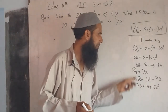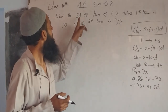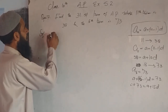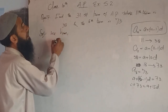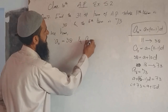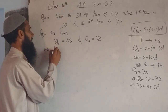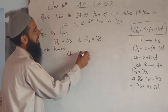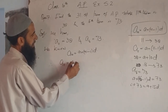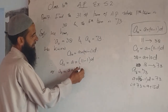We now have two relations. When we simplify these two equations together, we will get the value of 'a' and the value of 'd'. Then we can easily find the 31st term. So: a_11 = 38 and a_16 = 73. We know a_n = a plus (n minus 1) into d. Therefore a_11 = a plus 10d. Taking this as equation one.